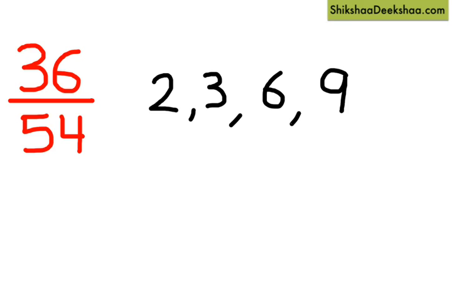So 2, 3, 6, and 9 are the numbers we can think of that can divide both 36 and 54 without leaving a remainder. In their tables we can find both 36 and 54.